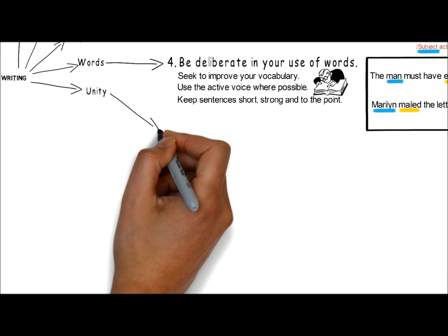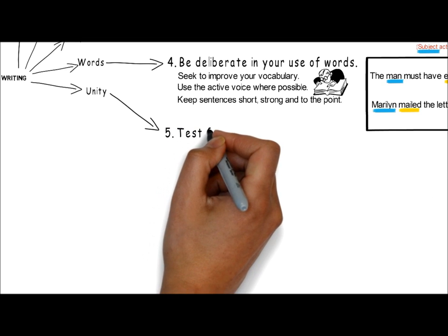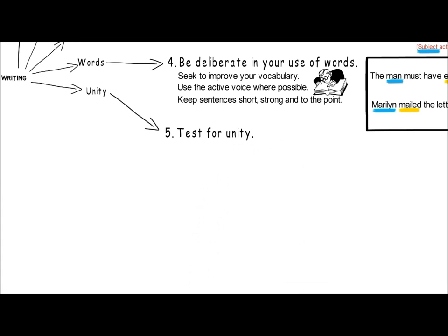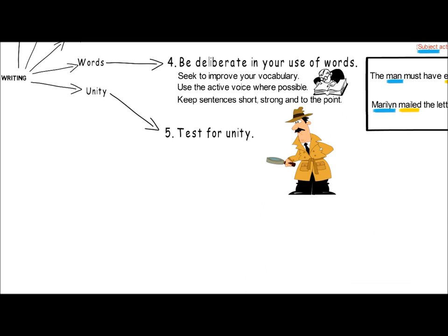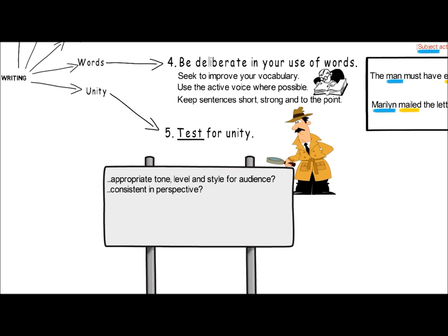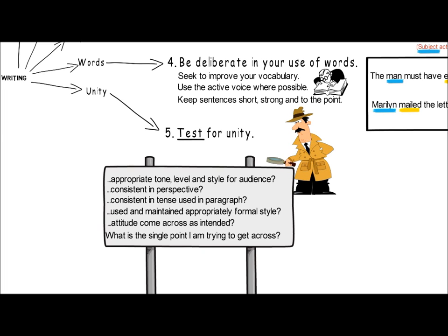The final principle is unity. Unity is the oneness in a paragraph or essay that results when all words and sentences contribute to a single main idea. You can plan for unity in your writing by asking yourself a number of questions, and after you have written a paragraph, you can test it for unity. Does the paragraph have the appropriate tone, level, and style for your intended audience and their familiarity with the subject? Are you consistent in the perspective and tense you have used? Have you used and maintained an appropriately formal style? Does your attitude come across as you intend? What is the single point you are trying to get across? Remember, the paragraph should represent just one central idea, with all sentences contributing to that idea.